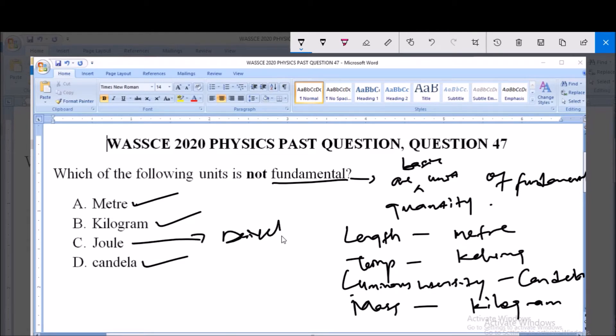Now C, Joule, is a derived unit and this derived unit is a unit of work or energy. So Joule is a unit of work or energy, and as we know, work and energy are derived quantities.